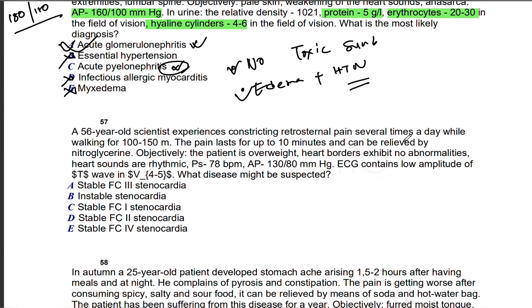Next: retrosternal pain several times a day while working for 100 to 150 meters. The pain lasts for 10 minutes and can be relieved by nitroglycerin. Constricting retrosternal pain, relieved by nitroglycerin—this is a sure case of angina. ECG shows T-wave changes in V4-5. We can diagnose it by the first two lines. They're asking about classification. It is exertional angina and we have to classify.